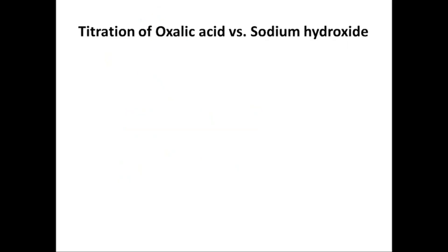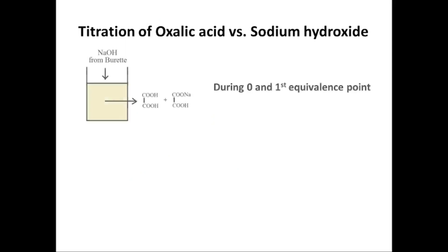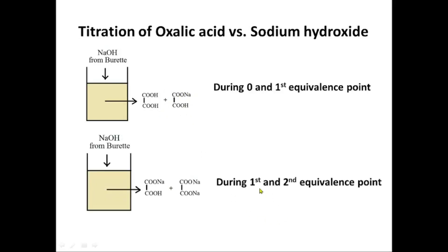When titrating oxalic acid against sodium hydroxide from the beginning up to the first equivalence point, the beaker will contain unreacted oxalic acid and monosodium oxalate. Between the first and second equivalence points, the beaker will contain monosodium oxalate and disodium oxalate. Monosodium oxalate is still weakly acidic because it has one COOH group, and disodium oxalate is a salt, so this weak acid along with the salt constitutes a buffer.